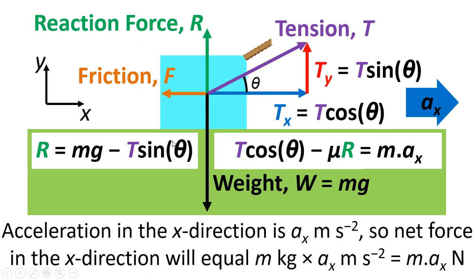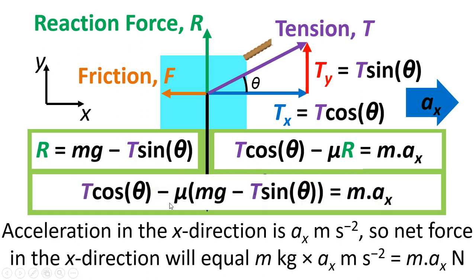So we've now got two equations with two unknowns. Now we're trying to solve for the tension in the rope T. So if we substitute in, instead of writing R, if we just write in this term here, mg minus T sin theta. We've now got an equation with one unknown. And we can rearrange this to give us an equation for T.